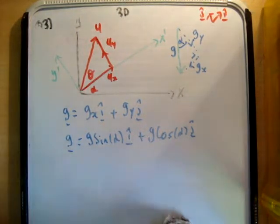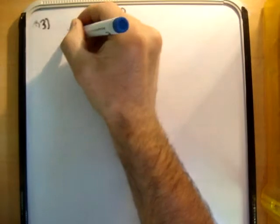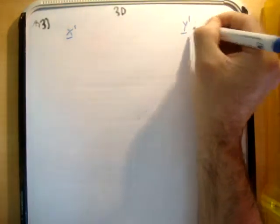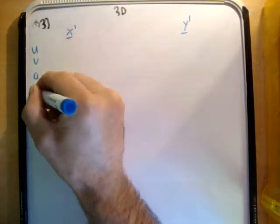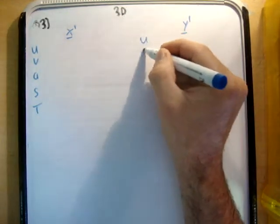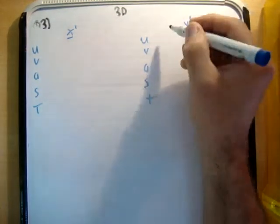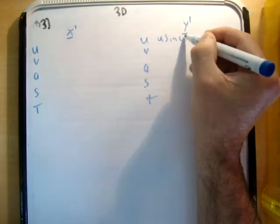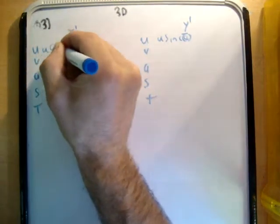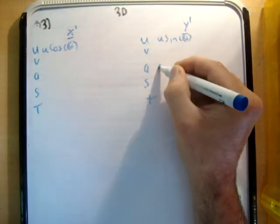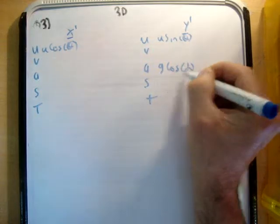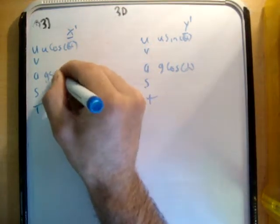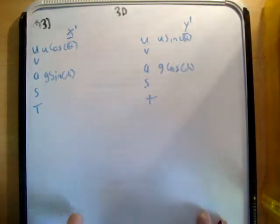So the next thing to do is our SUVAT. So let's just put in the vector, we'll say the information that we know. We know this was equal to u times the sine of theta. This is u times the cos of theta. This is g times the cos of alpha. This is g times the sine of alpha. Nothing new there.